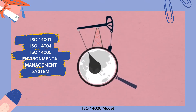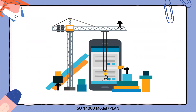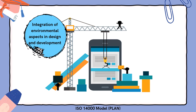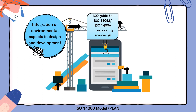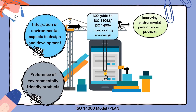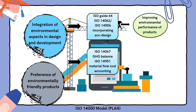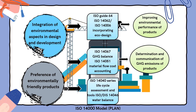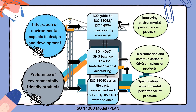ISO 14005 Environmental Management System. For the ISO 14000 model Plan phase, it will help the integration of environmental aspects in design and development using ISO Guide 64, ISO 14006-2, and ISO 14006 incorporating eco-design to improve the environmental performance of products. Next, preference of environmentally friendly products using ISO 14006-7, GHG Balance ISO 14005-1, and Material Flow Cost Accounting for determination and communication of GHG emissions of products. It also uses ISO 14040 Series Life Cycle Assessment and Tools, and ISO 14046 Water Balance for the specification of environmental performance of products.